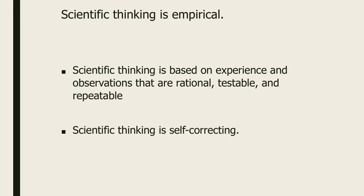One of the things that's really important about scientific thinking is that it's empirical — meaning the knowledge we talk about is based on experience and observations that are rational, testable, and repeatable. Science is also self-correcting: when science finds out it's been thinking about something wrong, it corrects itself, takes in new observations and new ideas, and gets rid of old ideas that don't work.